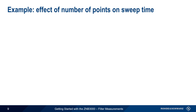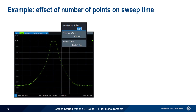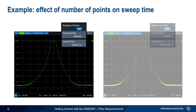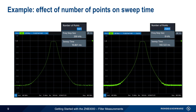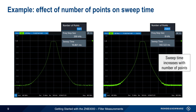Let's focus on the effect of number of sweep points on sweep time. In this example, we're using only 1001 sweep points and have a total measurement time of just under 11 milliseconds. Keeping all other settings the same and increasing the number of points to 25,001, sweep time increases almost 50-fold to 542 milliseconds. It's important to keep in mind that increasing the number of points will also increase the total sweep time.